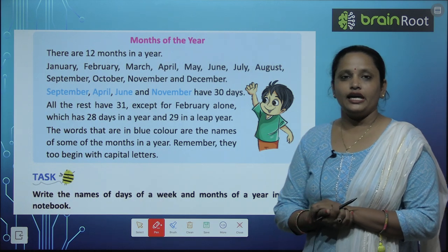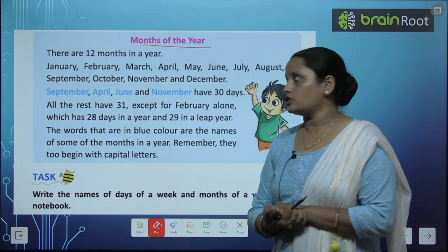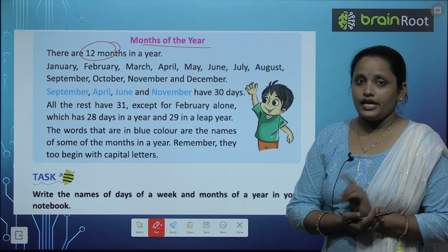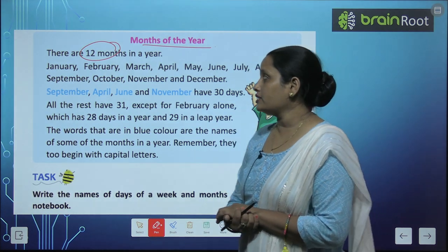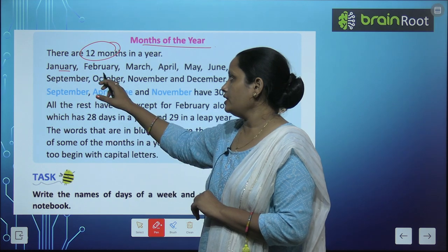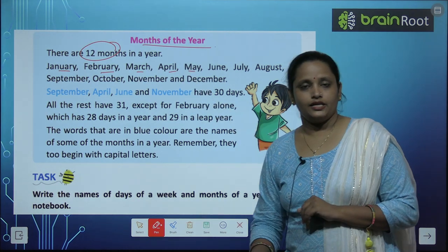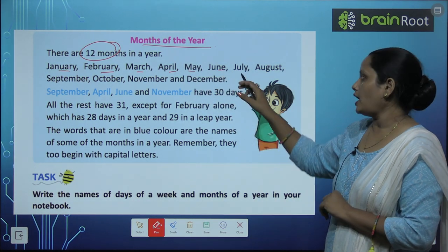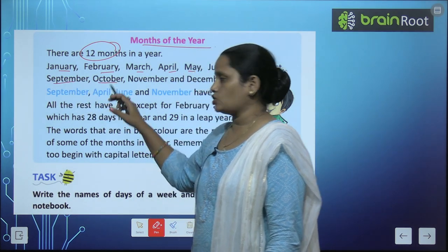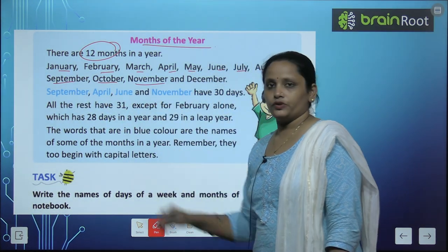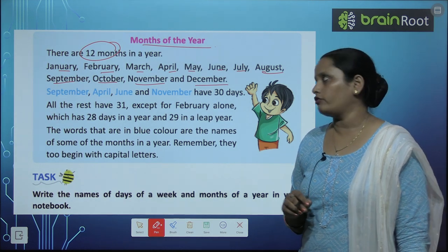After learning days of the week, let's learn months of the year. How many months are there in a year? There are 12 months in a year. The names of the months are: January, February, March, April, May, June, July, August, September, October, November, and December. These are the 12 months of the year.